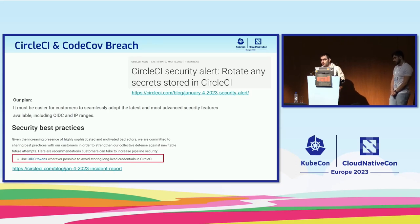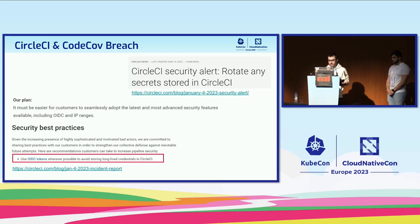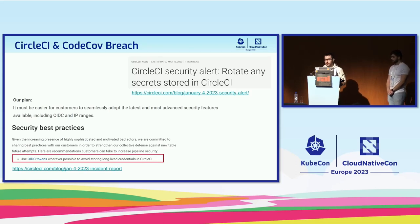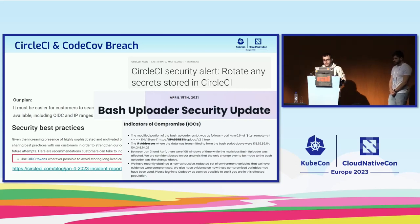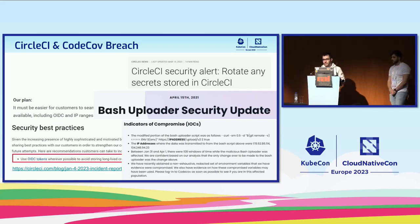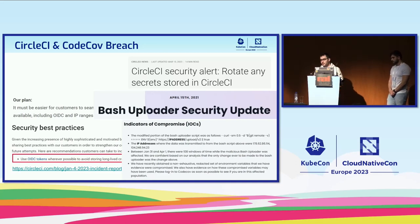They understood they were going through a security breach, which meant all the tokens saved in the system were actually compromised. Immediately when they discovered that, they announced and told all their customers to re-roll all their tokens. Furthermore, when they finished investigating the breach, they put forward several best practices, and one of them said to use OIDC tokens wherever possible to avoid storing long-lived credentials in CircleCI.